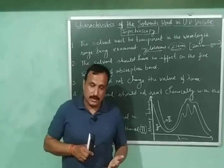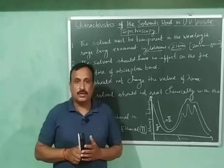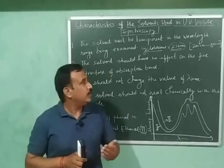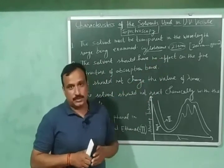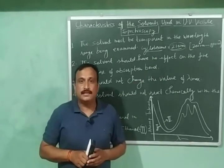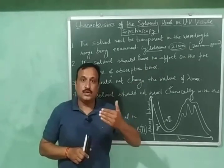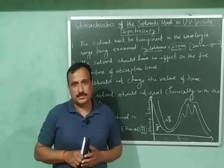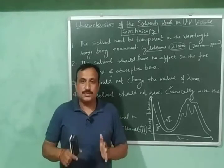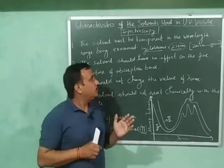So cyclohexane is going to be a good solvent in UV visible spectroscopy. Likewise, hexane, isooctane, water, they all have cutoff value 210 nanometers. And methanol, it has this cutoff value 215 nanometers. So this is the first characteristic of a good solvent.